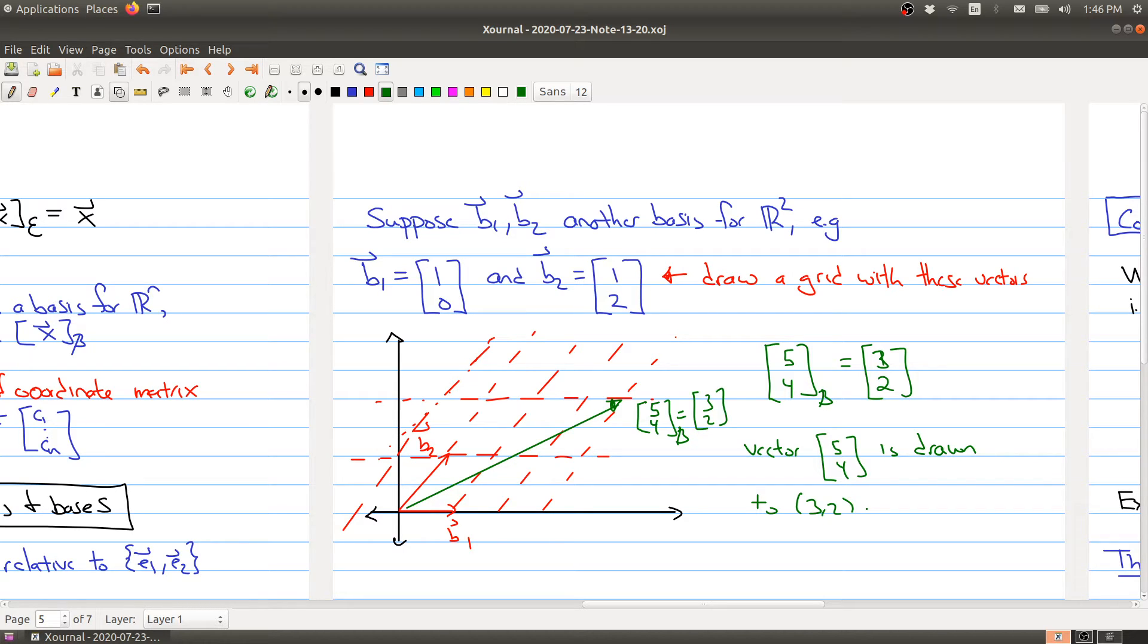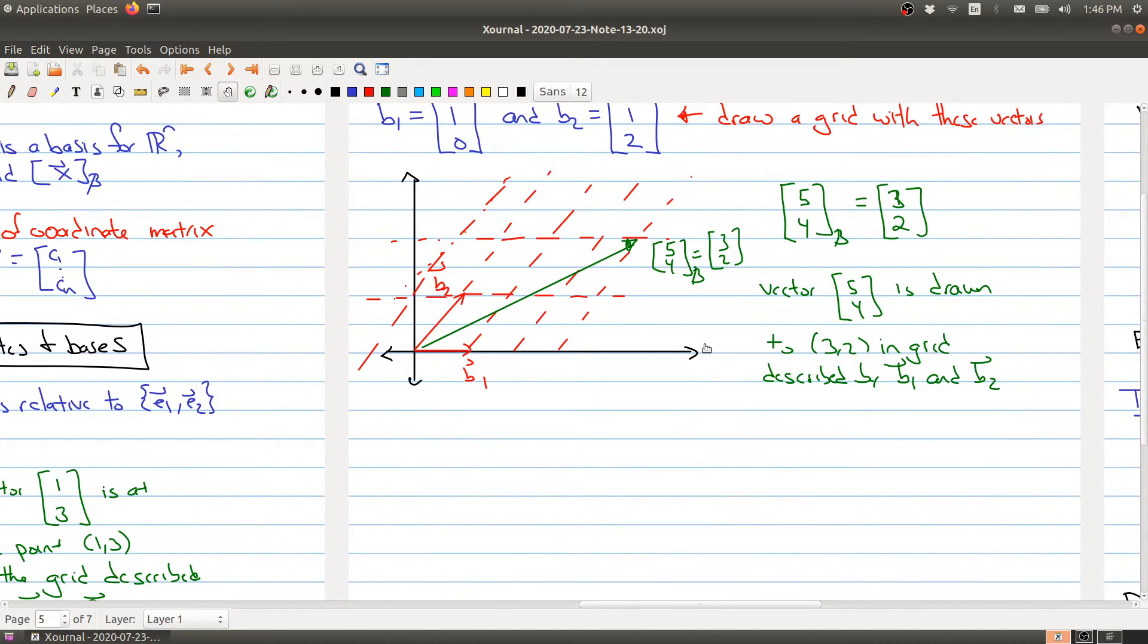And let me just finish the statement here in the grid described by B1 and B2. Okay. And let me just add some more notation here, or information here, since the B coordinate of 5, 4 is equal to 3, 2.